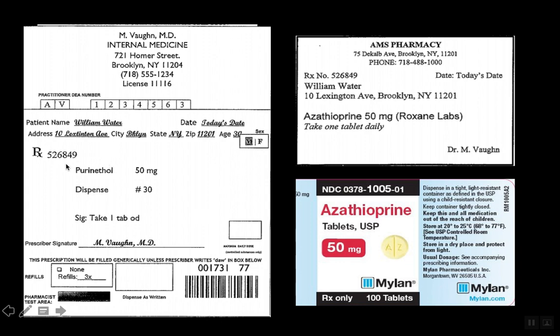If you didn't know that Purinethol was not the brand name of azathioprine, then it's going to be tough. That's why it's very important to practice your brand name and generic drugs — especially the top 300. In pharmacy school, we had to know the brand name, generic name, and indication. So we got a lot of practice with that.